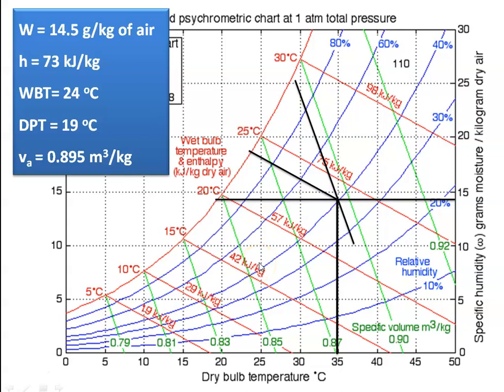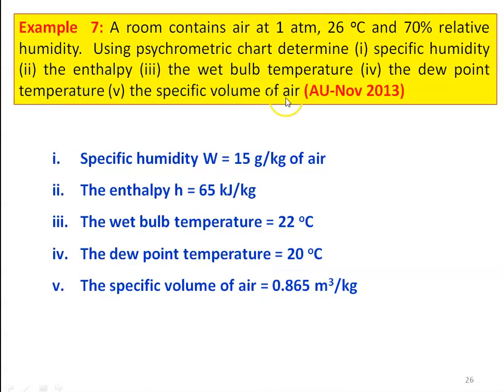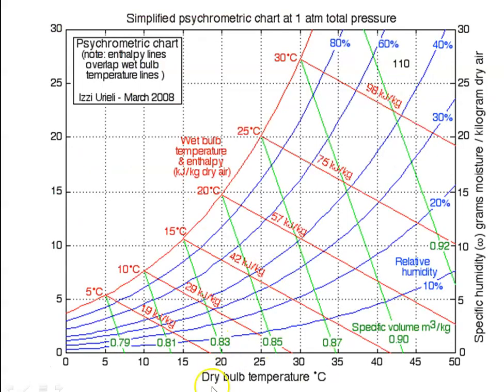Using the psychrometric chart, again determine the specific humidity, enthalpy, wet bulb temperature, dew point temperature and specific volume of the air. This is from Anna University question paper November 2019. These are all the answers — this is another example for practicing using the psychrometric chart. The X axis is dry bulb temperature, Y axis is specific humidity. Blue color lines are relative humidity lines, red color lines are wet bulb temperature and enthalpy, and green color lines are specific volume of the air.